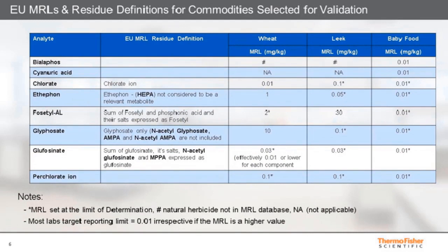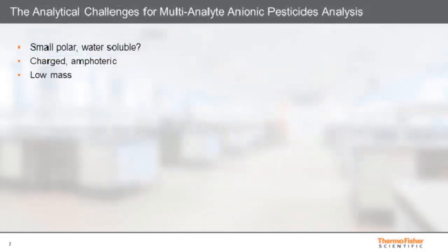Another issue is the variation in current maximum residue levels for different commodities, most of which are set at the limit of determination, as shown in the table covering the three matrices used for validation: wheat, leek, and baby food. In most cases, laboratories use a target reporting limit of 0.01 milligram per kilogram — so 10 ppb — even in cases where maximum residue levels are higher, as with glyphosate in wheat. Each stage of the analysis also presents its own analytical challenge.